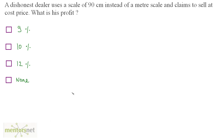A dishonest dealer uses a scale of 90 centimeters instead of a meter scale and claims to sell at cost price. What is his profit? First of all, let us assume that this scale's price, or the price at which this dealer buys, is 1 rupee per centimeter.